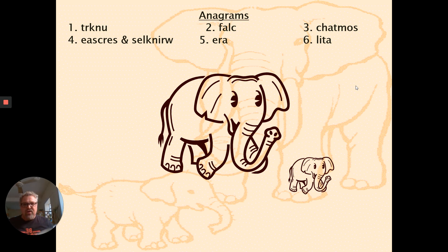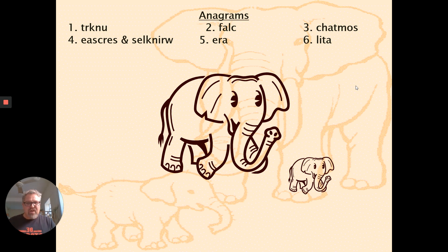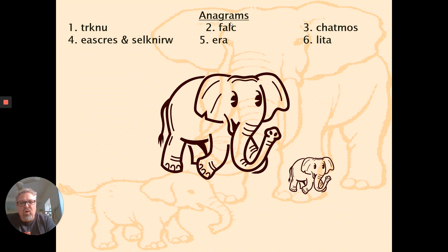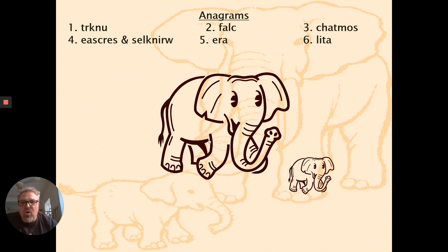In your guiding notes, the bottom of page one asks you to label parts of an elephant using anagrams. An anagram is when you take a word and mix up the letters to make a new word — it's like a word puzzle. The first one is T-R-K-N-U. What part of an elephant would that be? It's the elongated nose of an elephant, which is called a trunk.